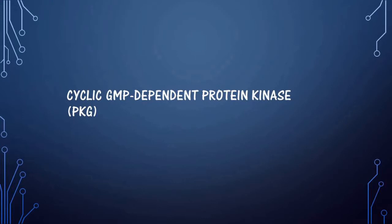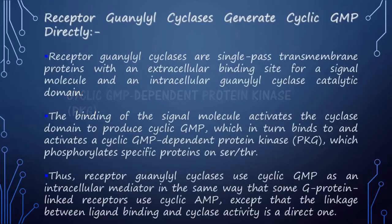Next is PKG — cyclic GMP-dependent protein kinase. PKG is synthesized by guanylyl cyclase, which is a single-pass transmembrane protein with an extracellular binding site for a signal molecule and an intracellular guanylyl cyclase catalytic domain. Binding of the signal molecule activates the cyclase domain to produce cyclic GMP, which activates cyclic GMP-dependent protein kinase, phosphorylating specific proteins on serine and threonine. This is not a very common pathway.